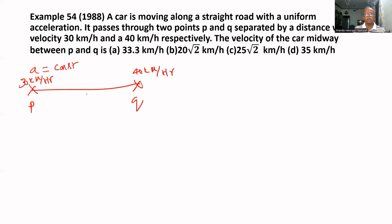The velocity of car in the midway between P and Q is what? Here, what is the velocity? It is asked. We have to find the acceleration. Acceleration is equal to V square equal to 2AS. From that, we can find the acceleration.